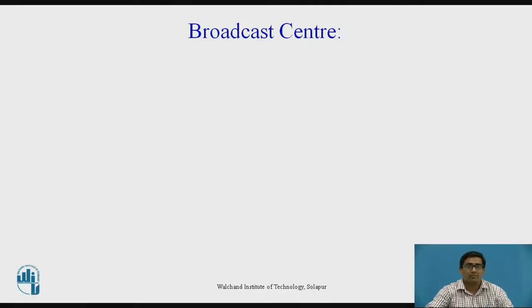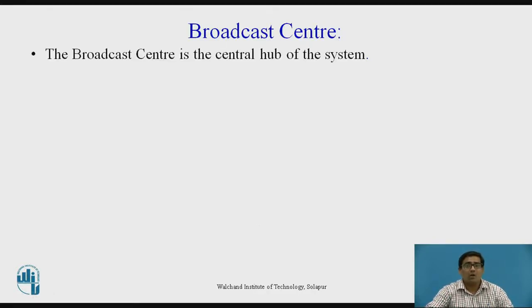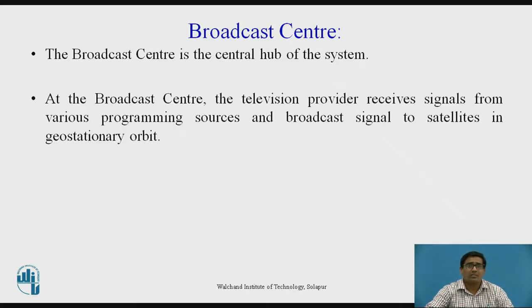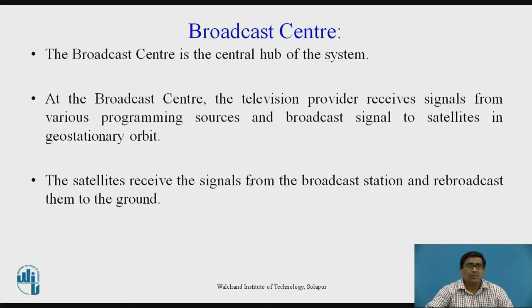Now we want to see the broadcast center. The broadcast center is the central hub of the system. At the broadcast center, we take and transmit programs. The television provider receives signals from various programming sources and broadcasts the signal to satellites in geostationary orbit. The satellite receives the signals from the broadcast station and re-broadcasts them to the ground, after which the DTH receives that signal to display on the TV channel.